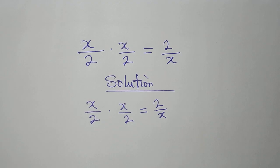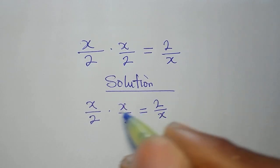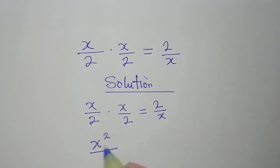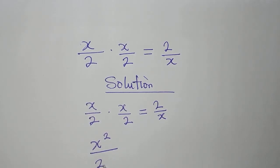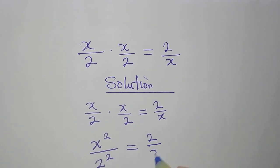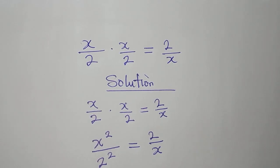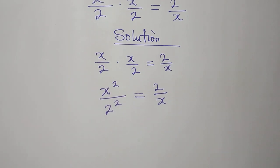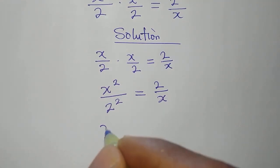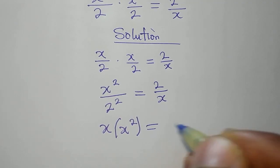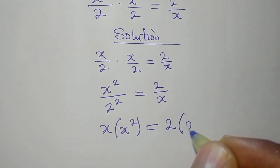We want to provide the complete solution. x times x is x squared over 2 times 2, which is 2 squared. This is still 2 over x. At this point we will cross multiply so that we have x times x squared equals 2 times 2 squared.